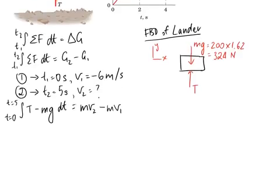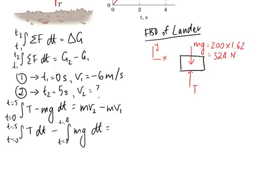So what I'm going to do now is separate this integral out. So it's going to become the integral from t equals 0 to t equals 5 of T dt minus, remember that you can separate these into two different parts, mg dt. And I can now write this as m times V2 minus V1.